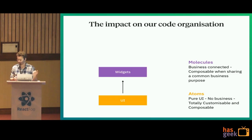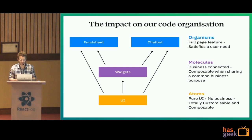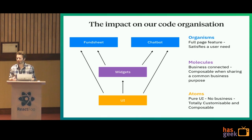Then we have widgets — business-connected components with a small shape, composable when they share a common business purpose. For instance, funds are specific business data, so all widgets about funds can be composed together to make a bigger product. At the top you have organisms — like the fund sheet or chatbots — which are full-page features that satisfy a user need by themselves. A fund sheet is a composition of widgets, and a chatbot can retrieve those same widgets to display fund information.